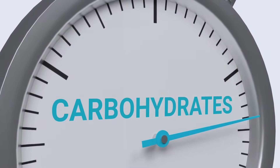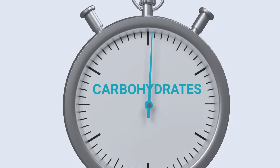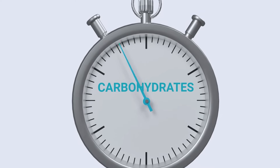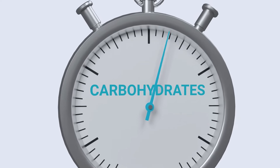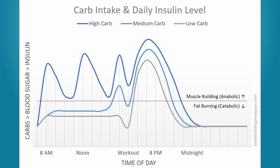Generally, endomorphs can benefit from lower carbs and higher fat, which helps to reduce total calorie intake and improve insulin function. On the other hand, ectomorphs can handle eating more carbs and less fat to fuel their metabolism and prevent muscle breakdown.